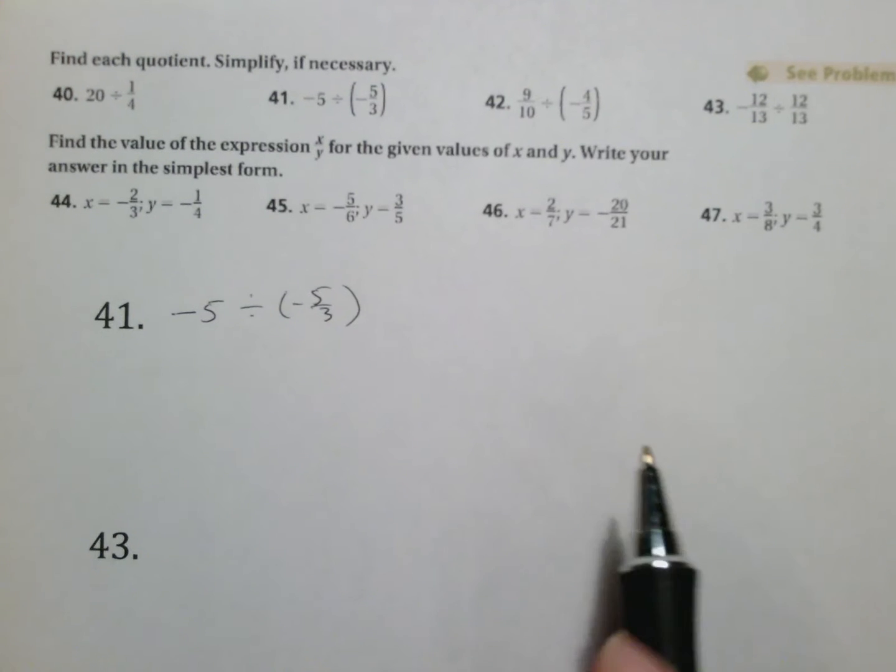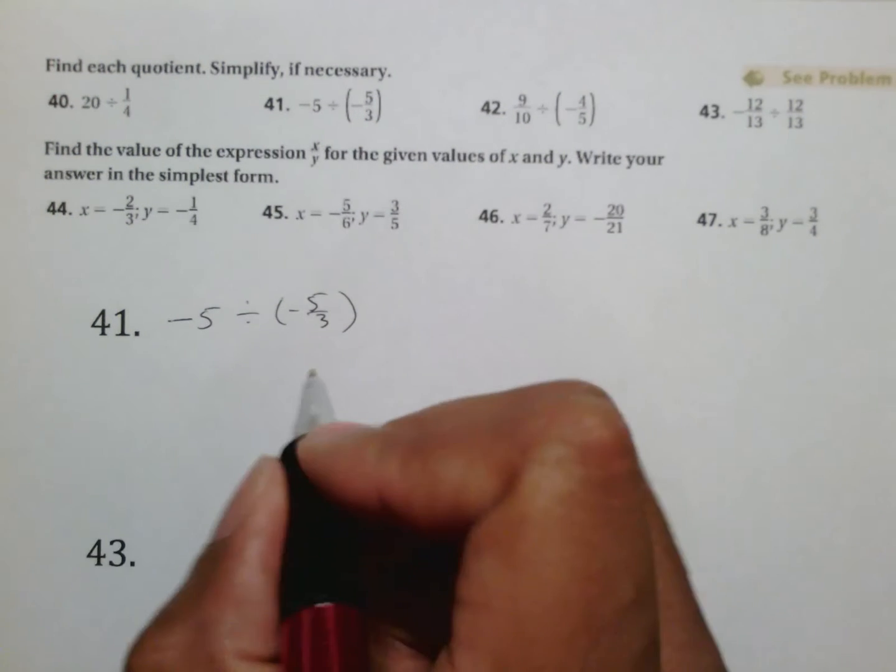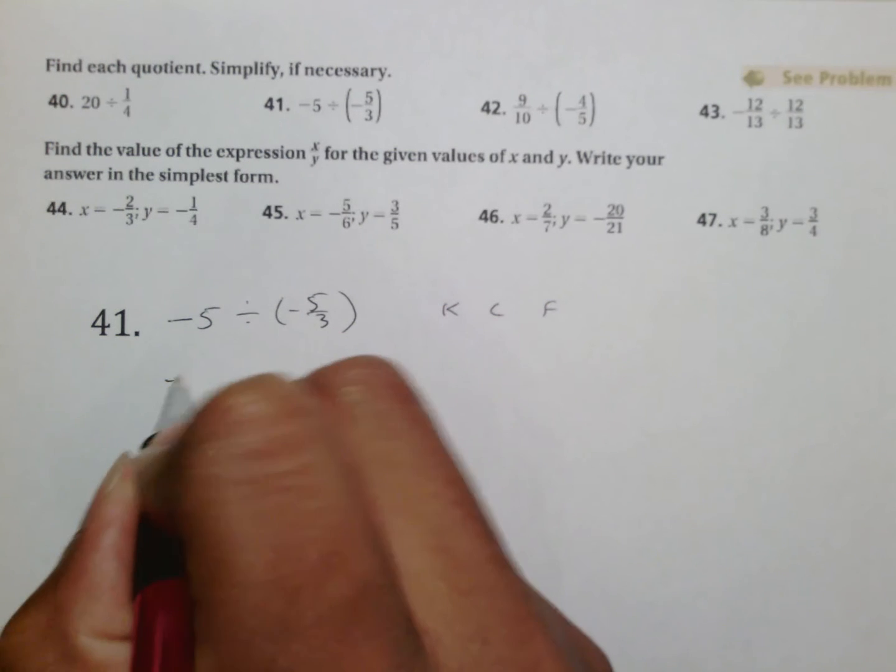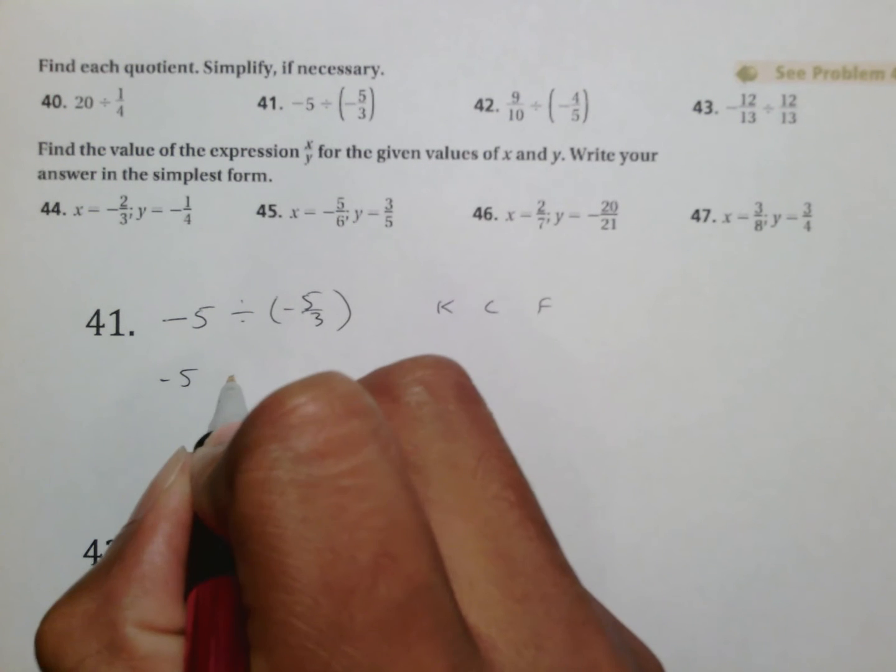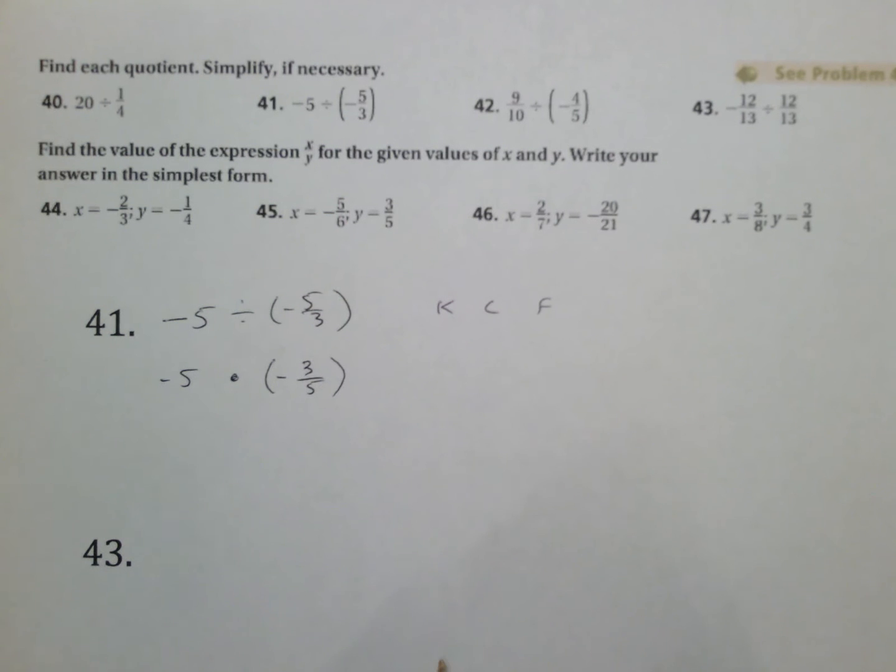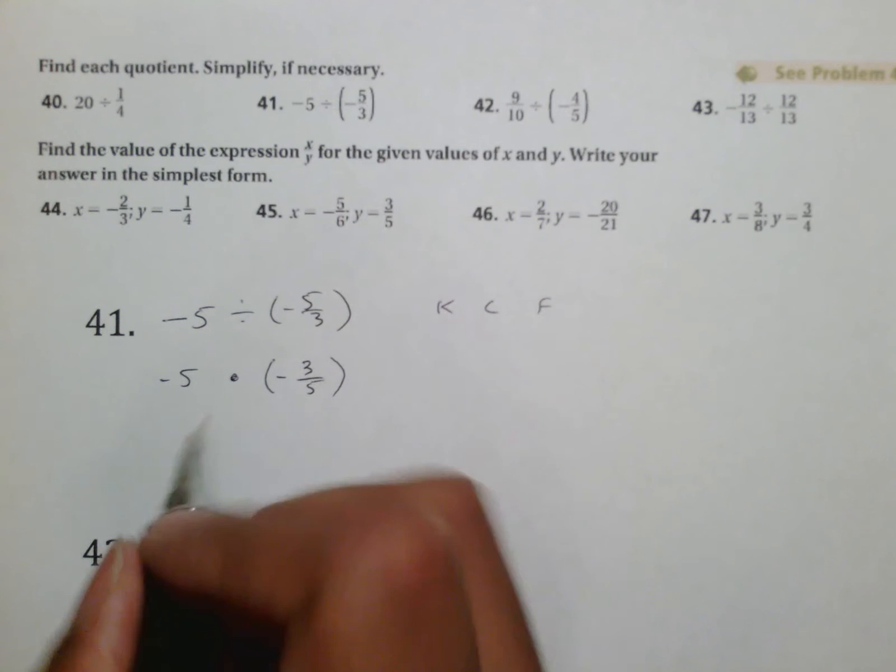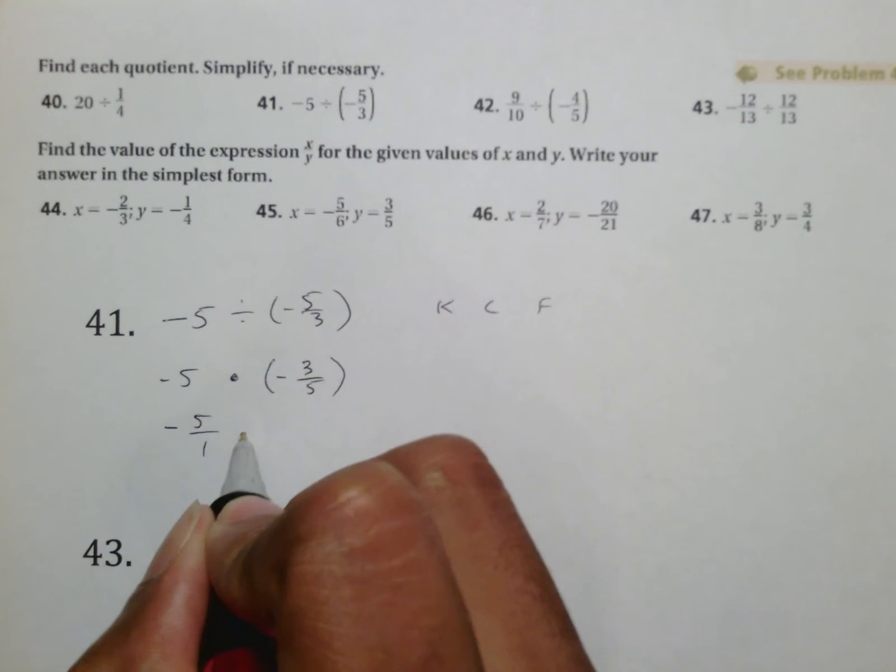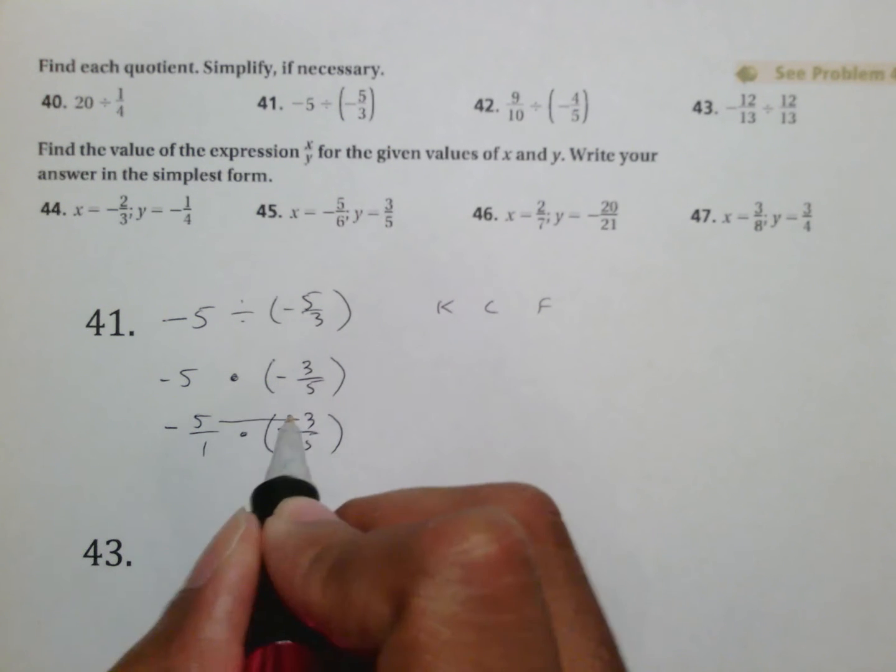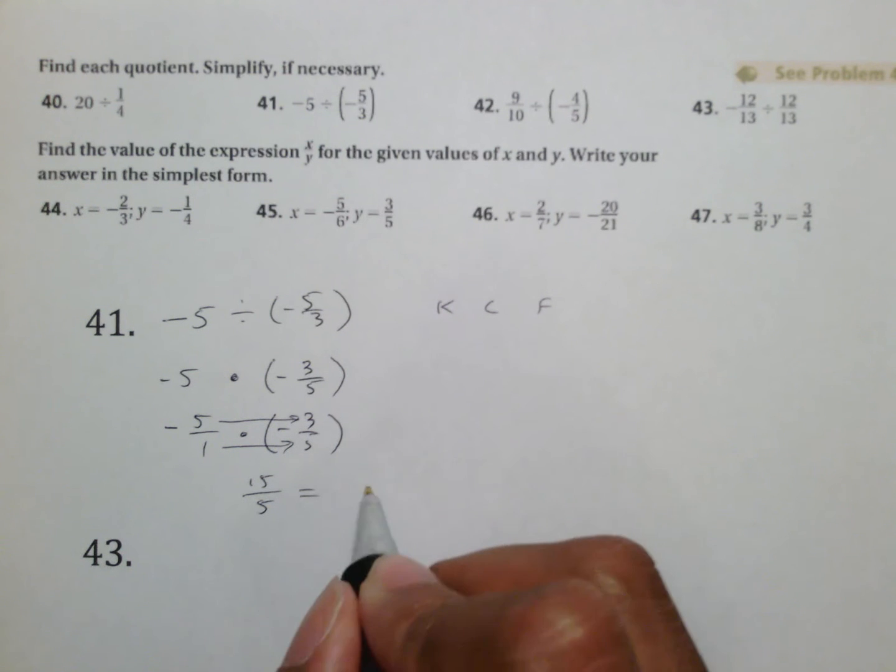So looking at this, negative 5 divided by negative 5 thirds would be written as using keep, change, flip. It's going to be negative 5, change this to be multiplication, and flip this to be negative 3 over 5. Now, if you don't know the rule about taking the whole number to the top, we can simply rewrite this as a fraction, which means we rewrite it as negative 5 over 1 times negative 3 over 5. Now we multiply 5 times 3 is 15, 1 times 5 is 5. This turns into a 3.